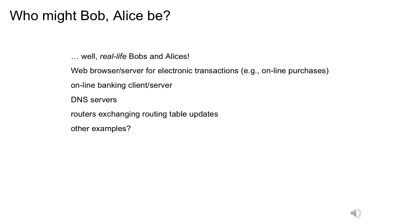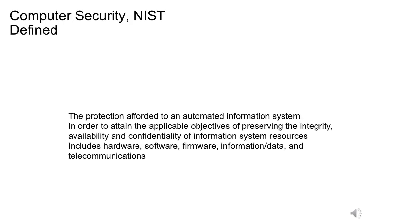So our next slide — the NIST group from the U.S. government has a very vibrant computer security practice, and they have a definition for computer security: the protection afforded to an automated information system in order to attain the applicable objectives of preserving the integrity, availability, and confidentiality of information system resources. It includes hardware, software, firmware, information, data, and telecommunications.